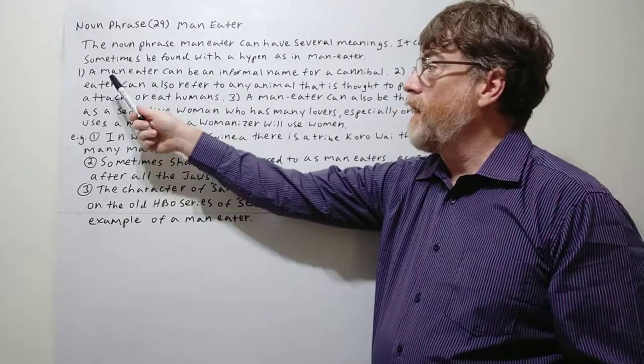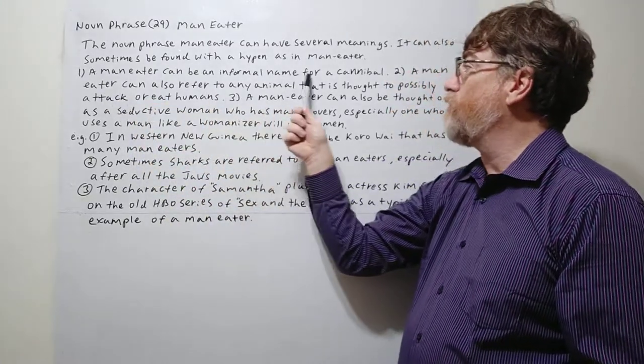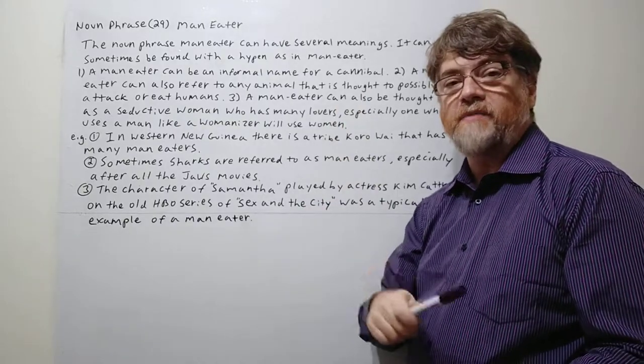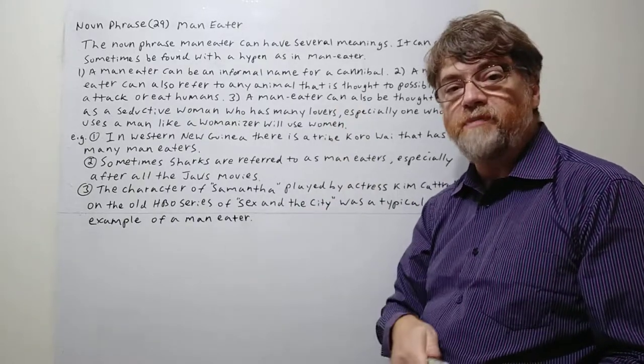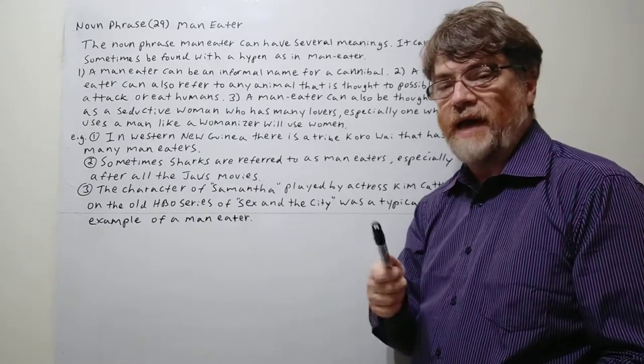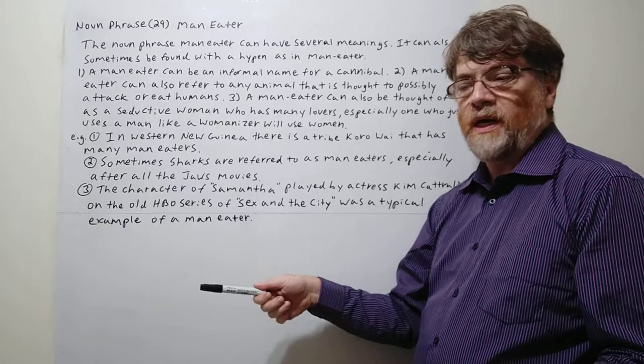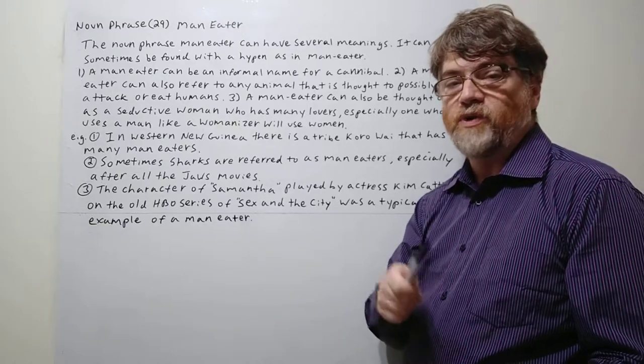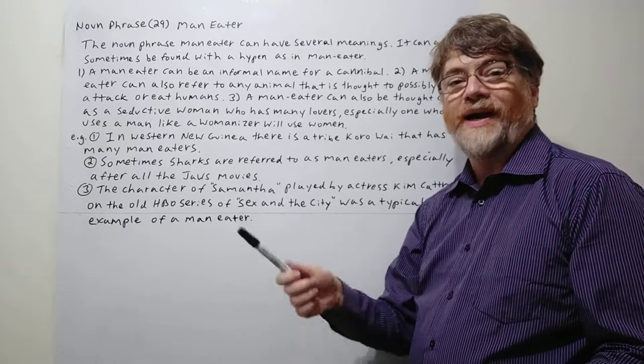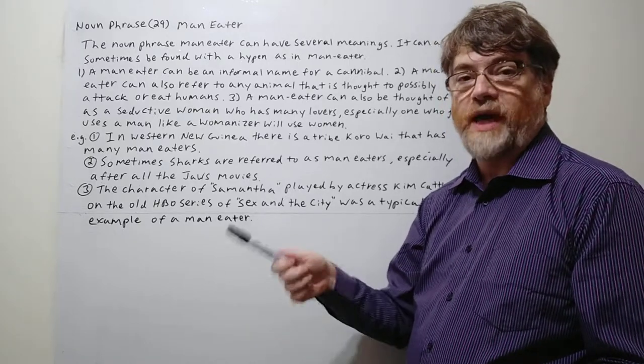This is the first meaning. A man-eater can be an informal name for a cannibal. Well, of course, with humans a cannibal is a person who eats other people. We can use the word cannibal in other species if some animal also eats the same kind, but of course with humans we use man-eater as a slang name for a cannibal, or it's another name for a cannibal.